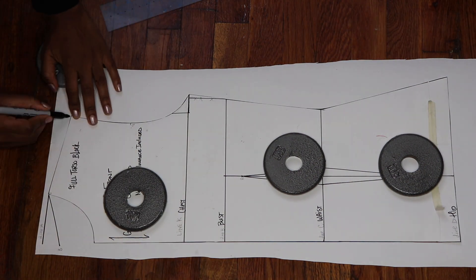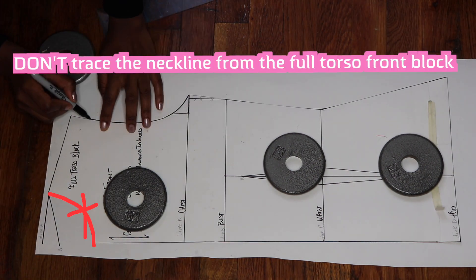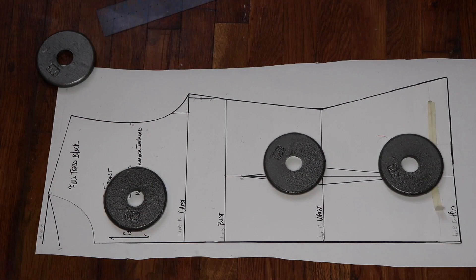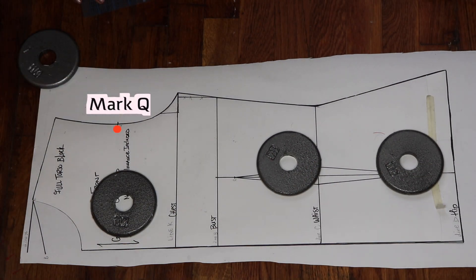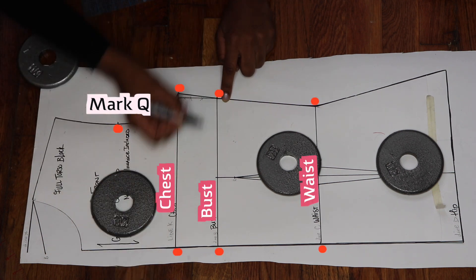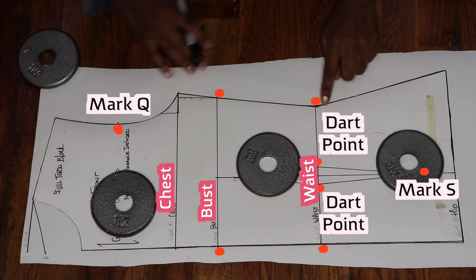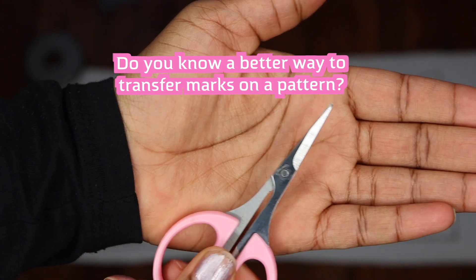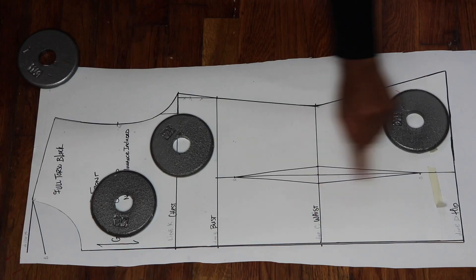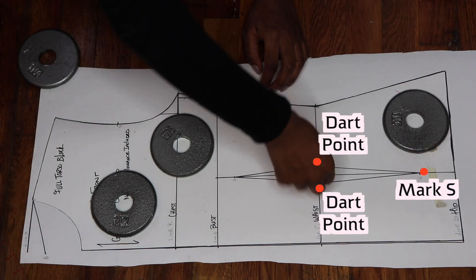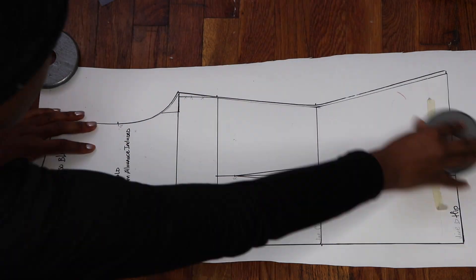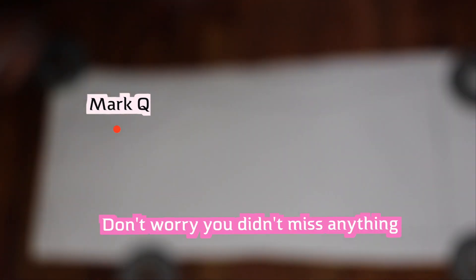After you've placed your full torso block down onto your pattern paper, you want to trace all around the edge and be sure to transfer the following marks: the mark Q notch, the beginning and end of the chest line, the bust line, the waistline, the dart points and mark S. Use a pointy object like a pair of scissors to engrave the dart points and mark S. Once you've finished engraving those points, you can put away the front torso block.